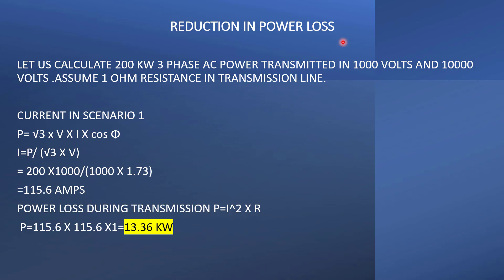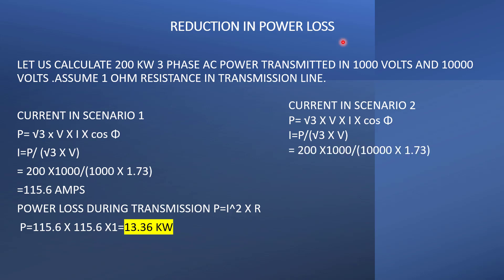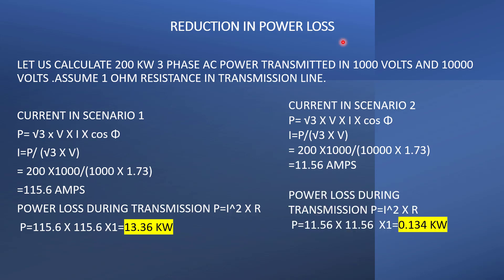In Scenario 2, we are transmitting at 10,000 volts. The current is I = P ÷ (√3 × V), and assuming cos φ = 1, substituting values: I = 200,000 ÷ (10,000 × 1.73) = 11.56 amps. The power loss is P = I² × R = 11.56 × 11.56 × 1 = 0.134 kilowatts. So if we transmit 200 kilowatts at 10,000 volts with 1 ohm per kilometer resistance, the power loss during transmission is only 0.134 kilowatts.